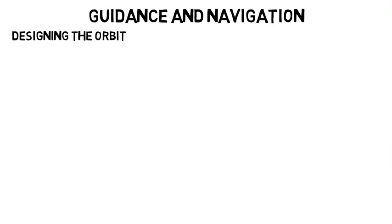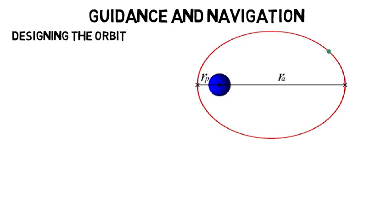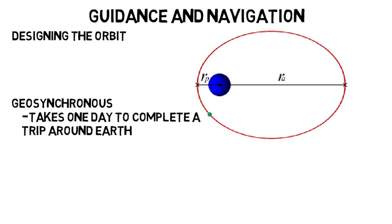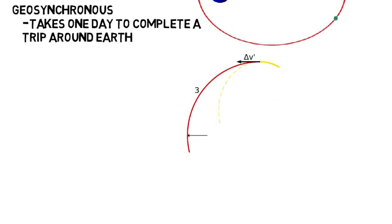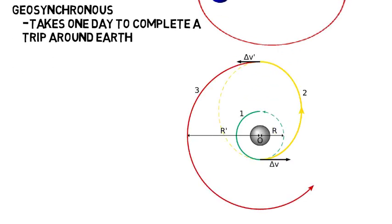Guidance and navigation is all about designing the orbit itself, or really just planning out the mission of how the spacecraft will travel. You may need the satellite to be geosynchronous, meaning it takes one day to complete a trip around Earth, so you've got to look at what shape orbit you should have. Or if at some point you need to change between orbits, the team would have to determine how much change in velocity there needs to be to do so.